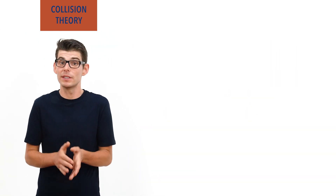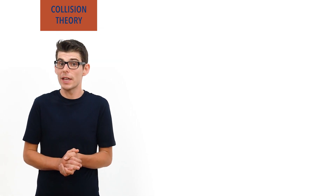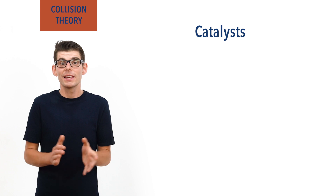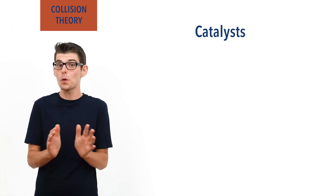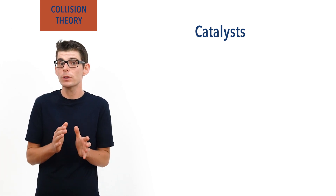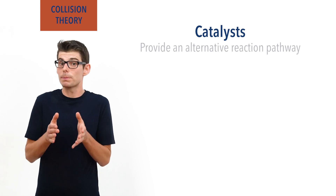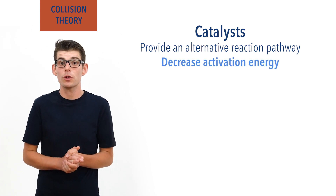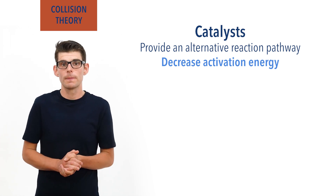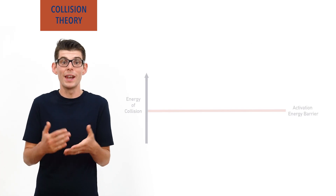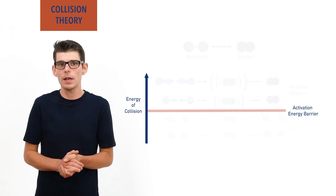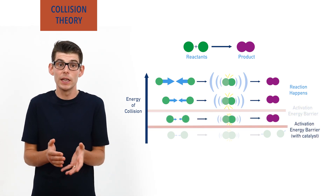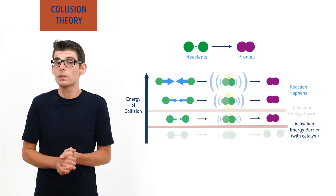One of the most effective ways of increasing the rate of a reaction is to decrease the activation energy required for a successful collision. To do this, another substance called a catalyst is needed. Catalysts provide a different route or pathway for a reaction to occur, meaning particles don't need to collide with as much energy in order to react. Catalysts don't get used up in a reaction and as a result they aren't considered reactants. If the activation energy for a reaction is lowered, more collisions happening each second can suddenly become successful, increasing the frequency of successful collisions.